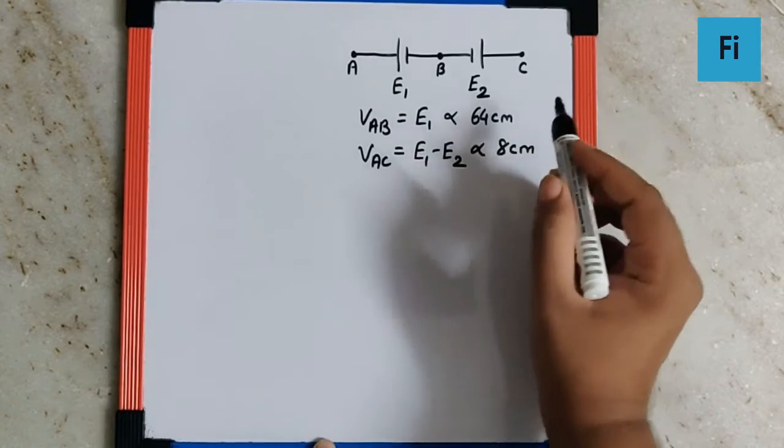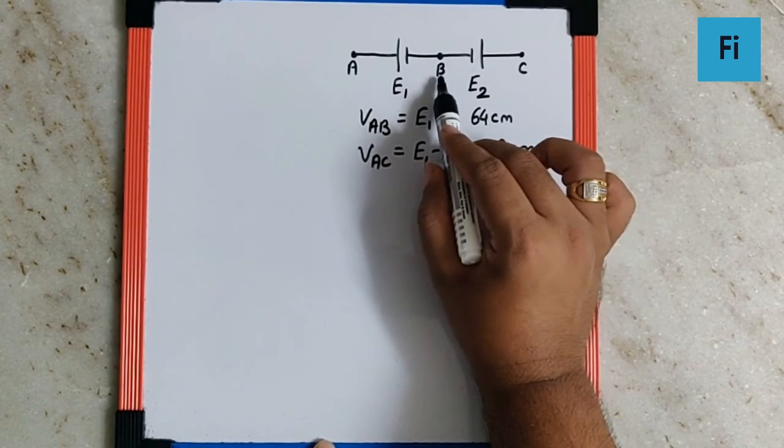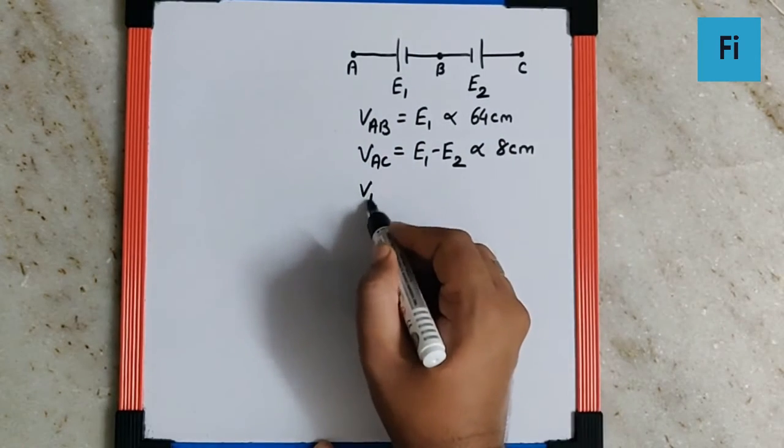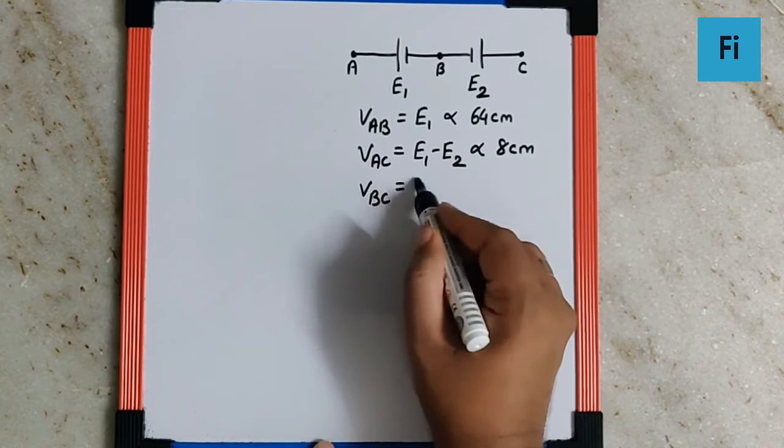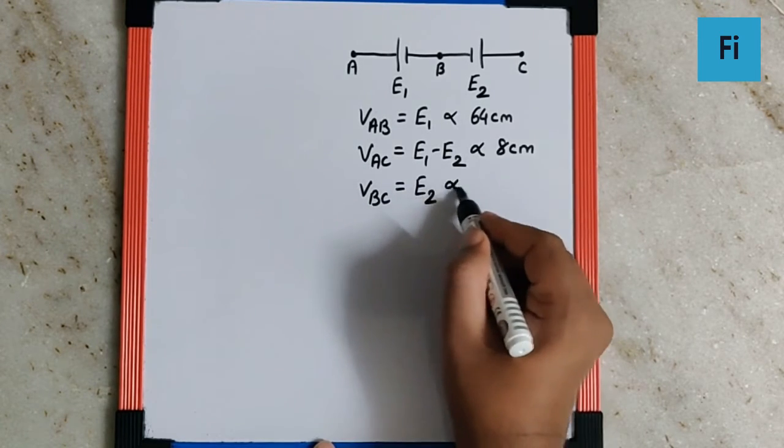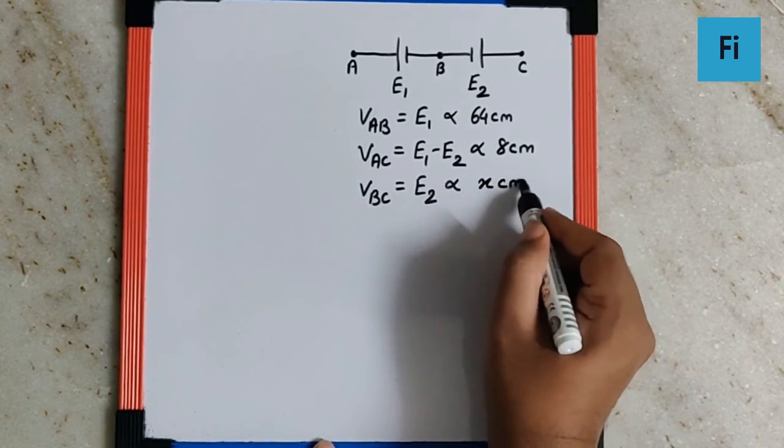And they are asking us, what if the potentiometer ends are measured between B and C, which is VBC, which we can say as E2 itself, proportional to X cm.